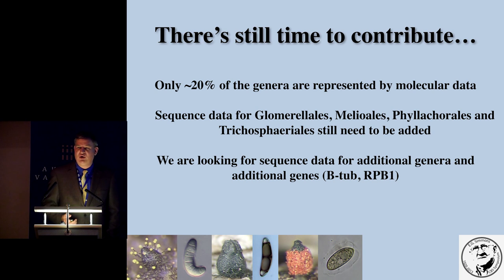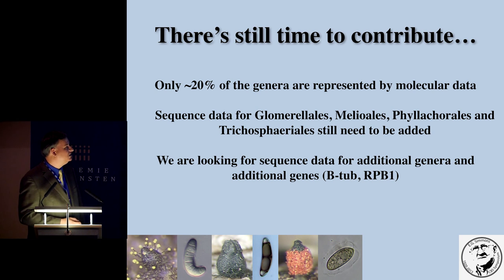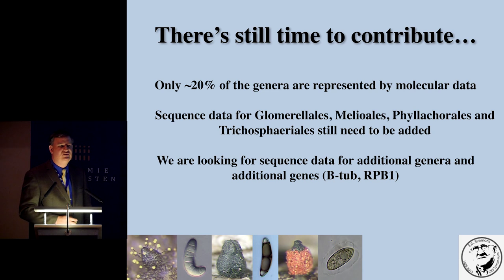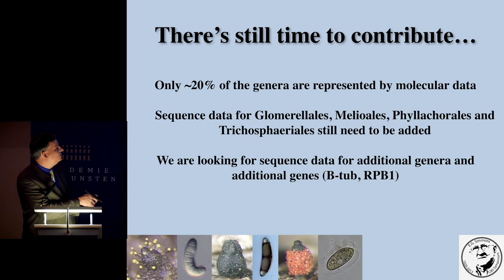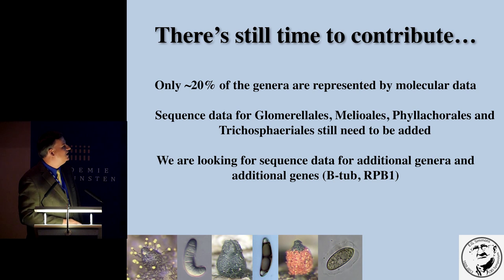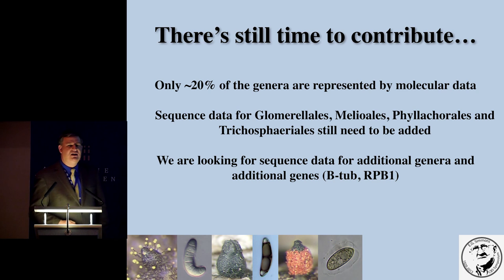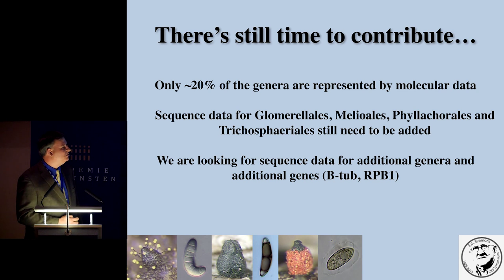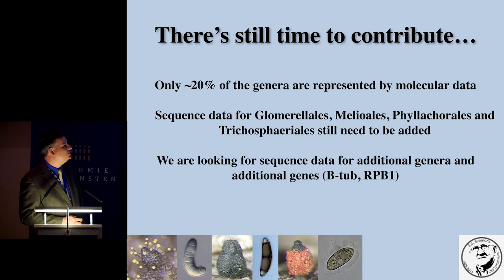This is a work in progress. We have many collaborators and are looking for more — if anyone is interested in contributing, collaborators are still generating more sequence data. We have only included about 20% of the genera so far. We will go back and add those four incertae sedis taxa, add whatever molecular data is available for them, and add beta-tubulin and RPB1 to include as many genes as possible, since adding just one more gene to the analysis makes a big difference.